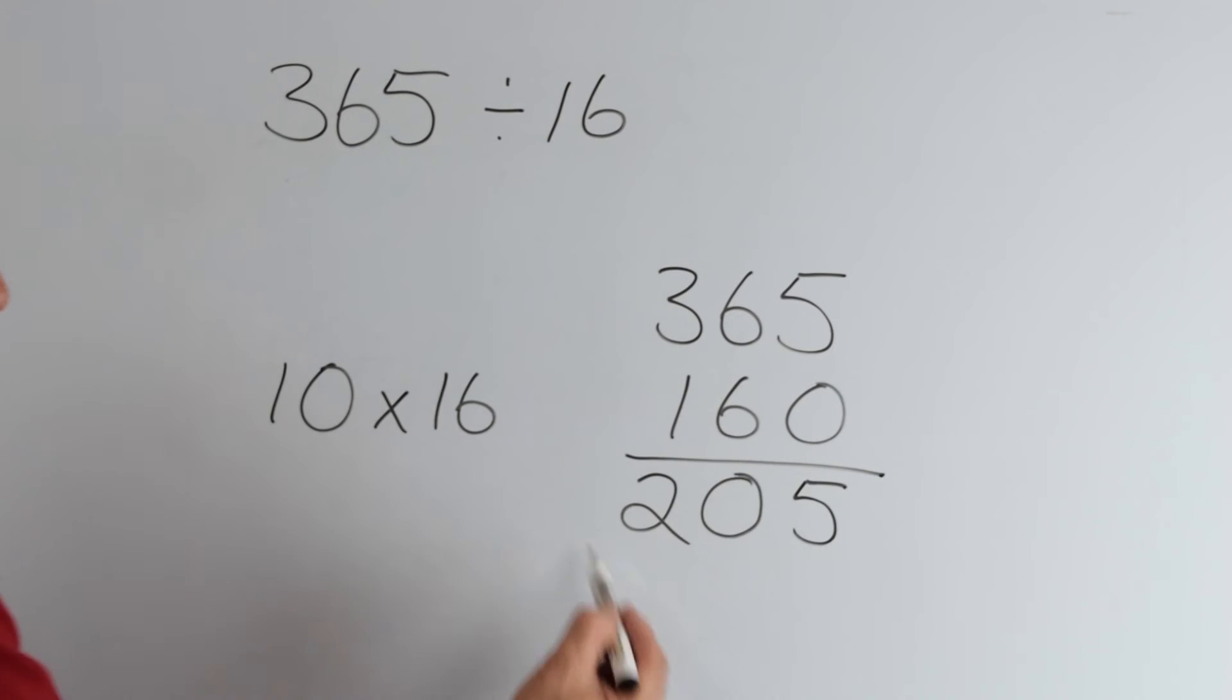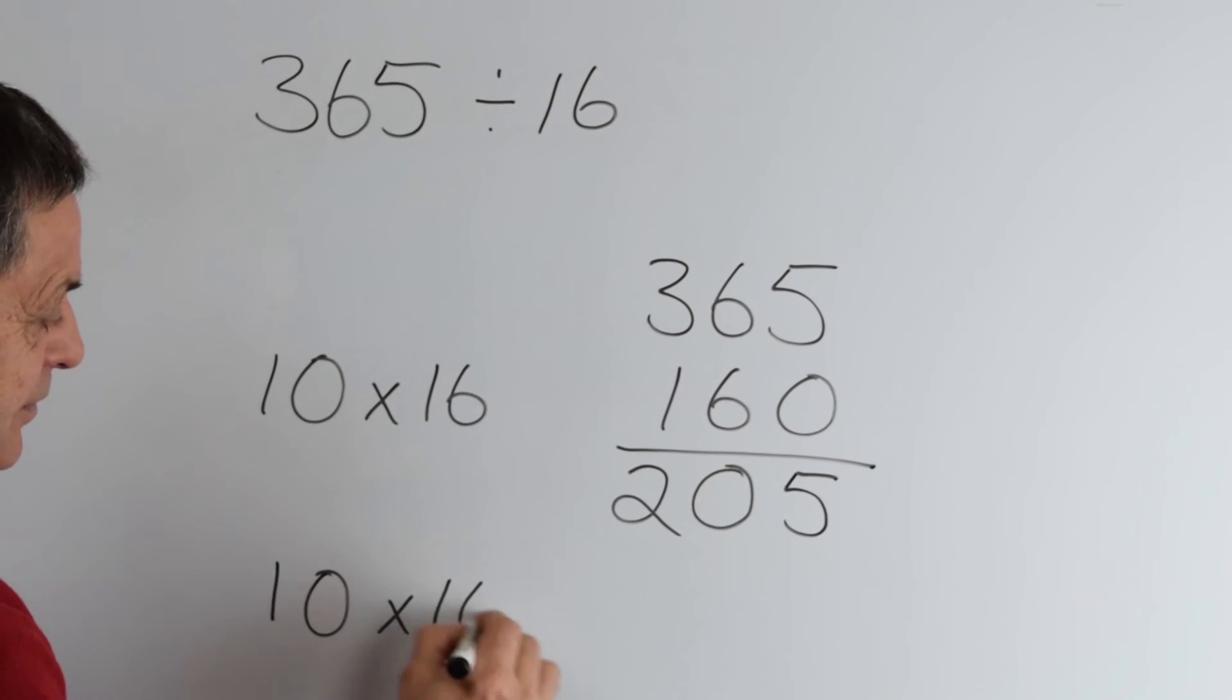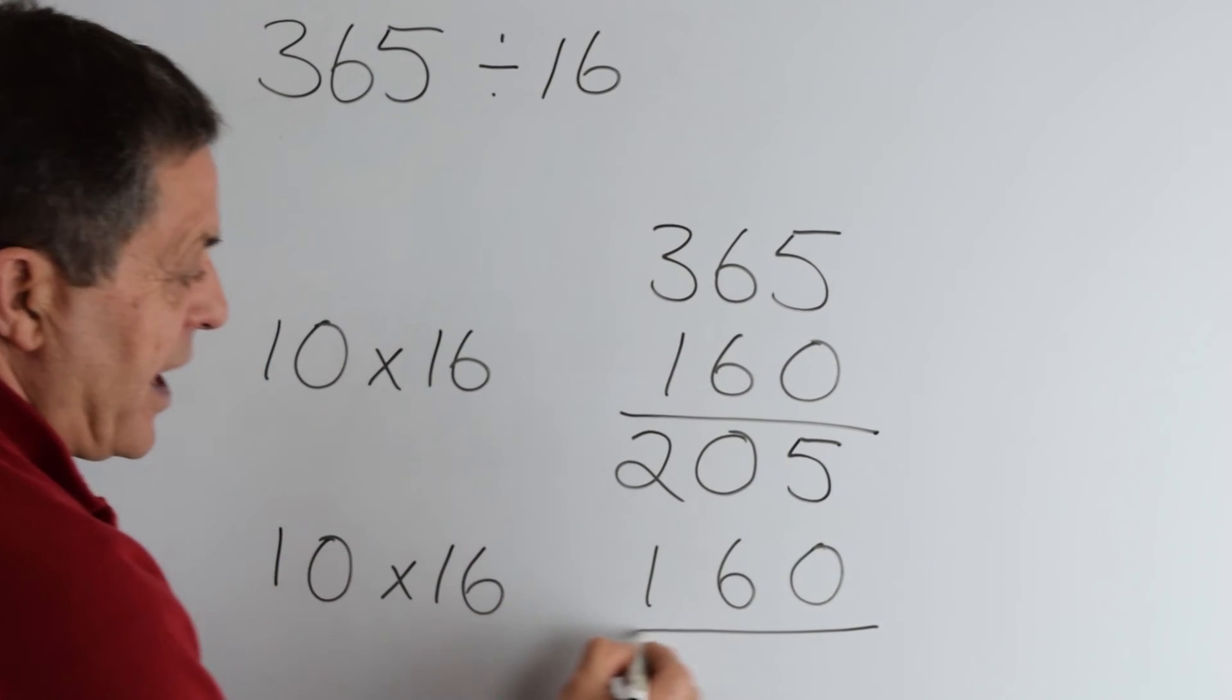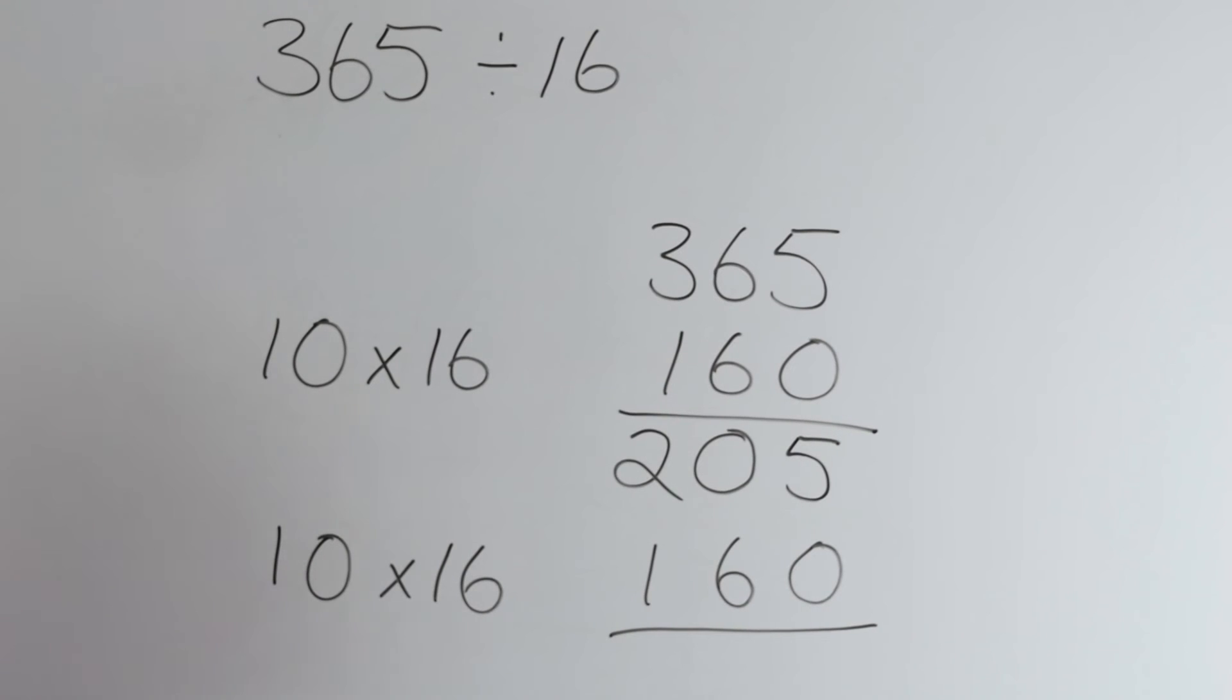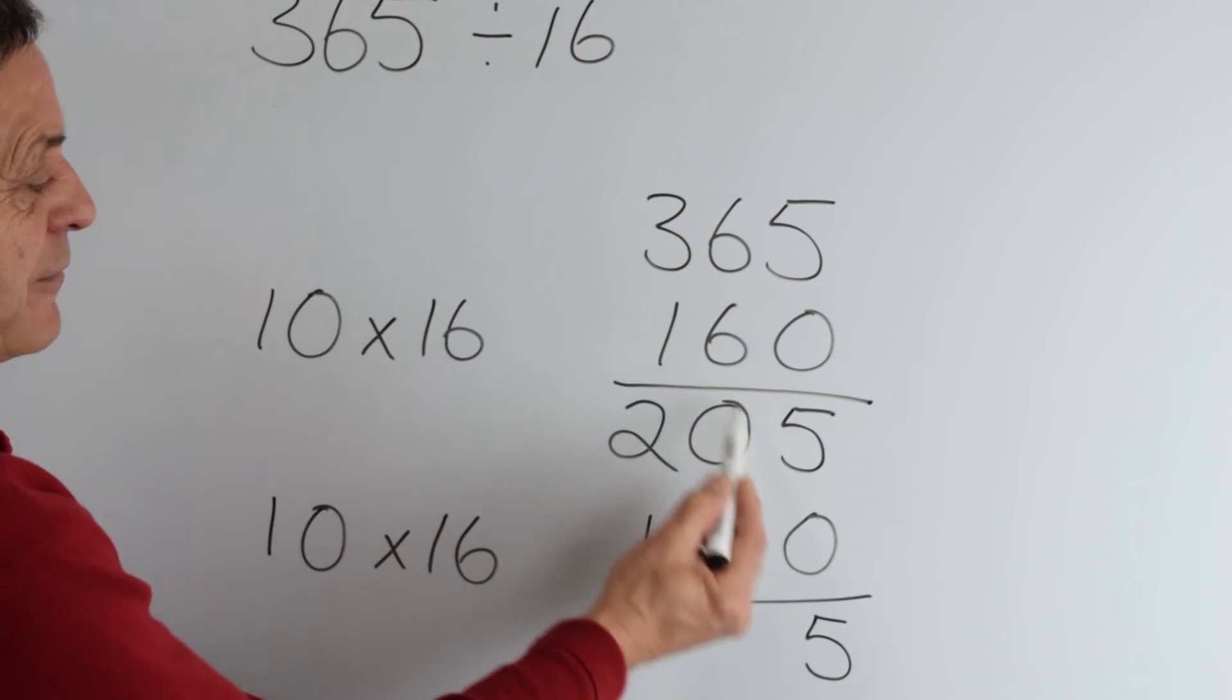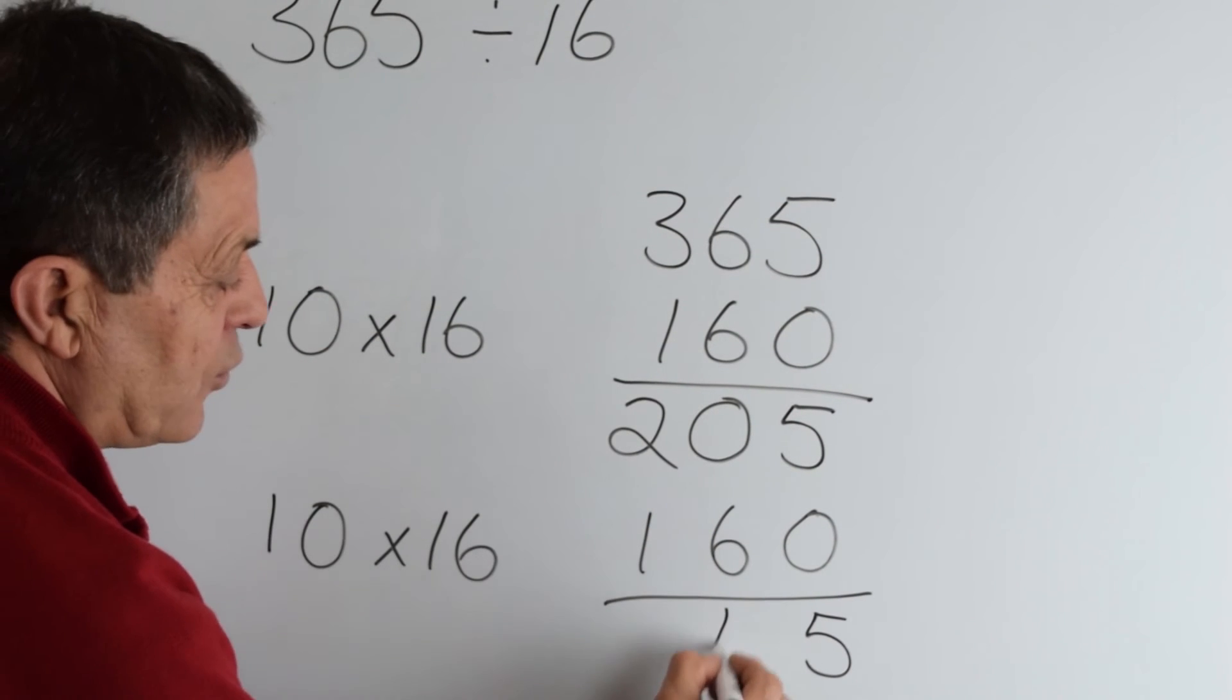From 205, we should be able to see that we could take another chunk of 10 16s. 160 away from that 205. 0 from 5 is 5. And let's look at that, 16 from 20 is 4.